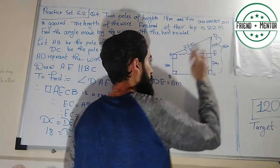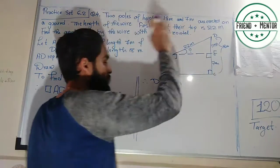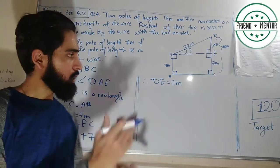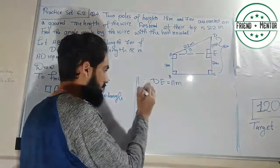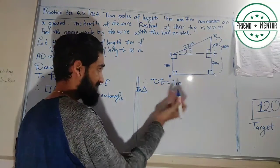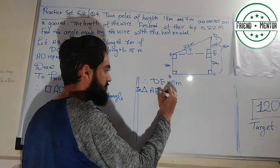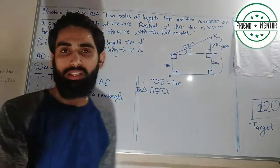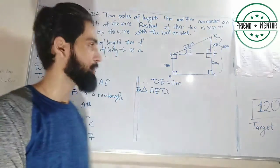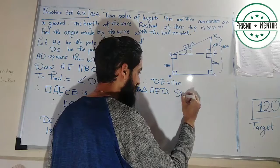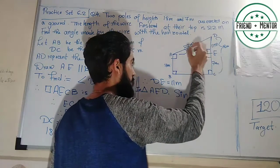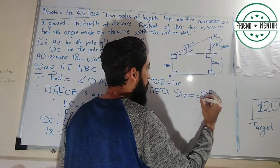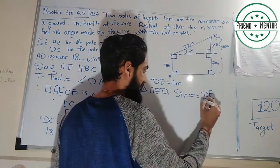DE is 11 meters. We need this angle — the opposite side is now known and the hypotenuse AD is already given. The hypotenuse is AD because this angle is 90 degrees. In triangle AED, we need the ratio involving opposite and hypotenuse, which is sine. Let the angle be x. Sine x is equal to DE upon hypotenuse AD.